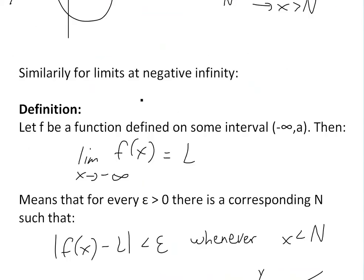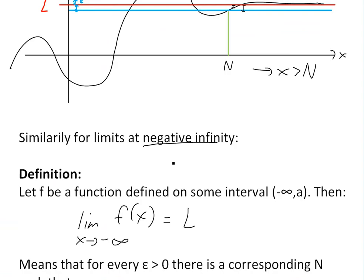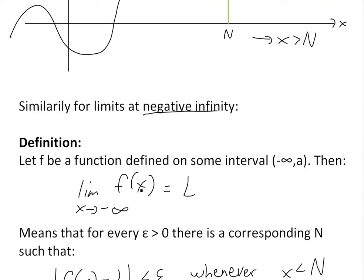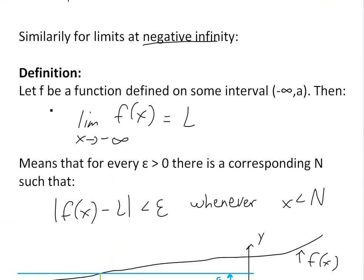Similarly, if we look at limits at negative infinity, it's basically almost the exact same thing with just a slight difference. Let f be a function defined on some interval negative infinity to a, instead of a to infinity.